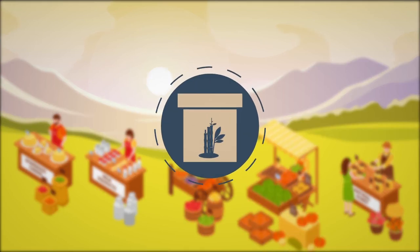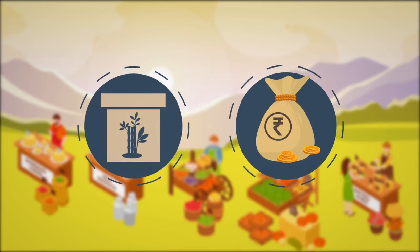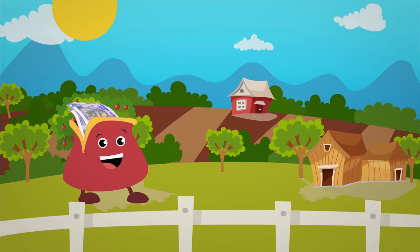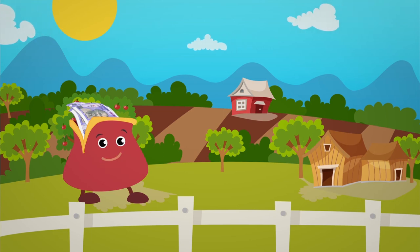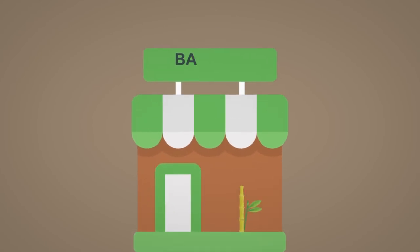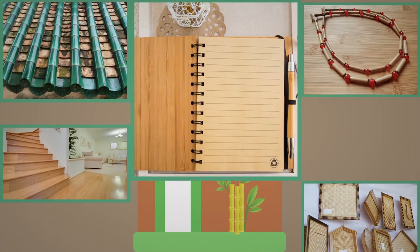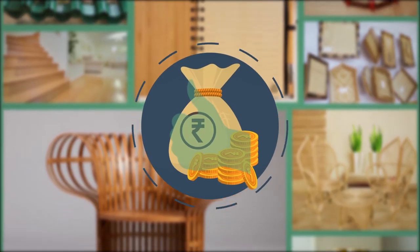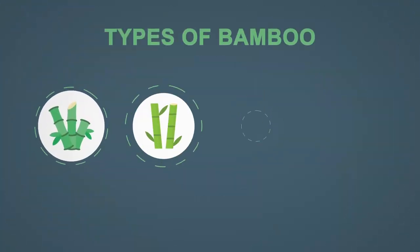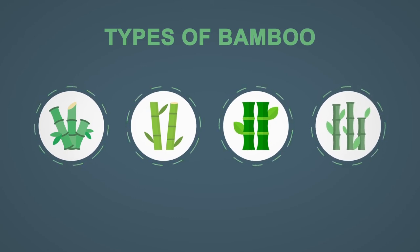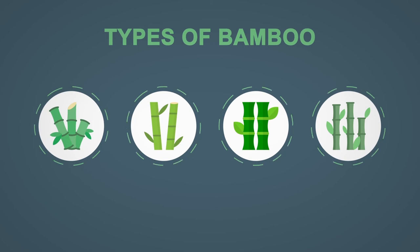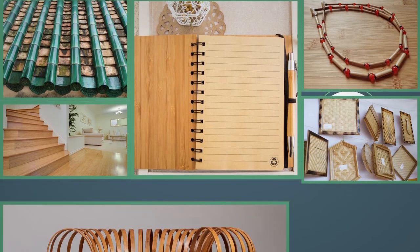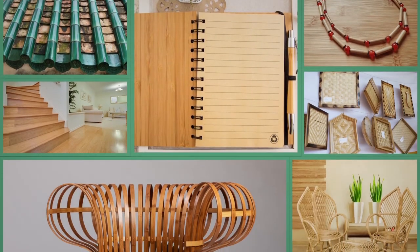Our bamboo products will be ready for market. We look at what work is being done in the area. Good bamboo products are used as construction material. We assess species and select the right bamboo species for the product. Finally, the final products are crafted and prepared for the Bamboo Treatment Center.